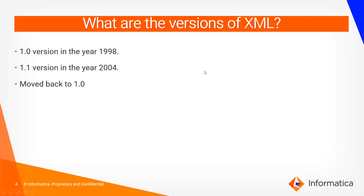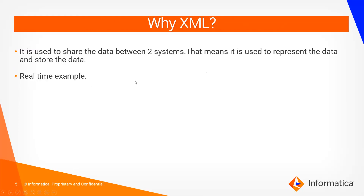What are the versions of XML? Version 1.0 came in the year 1998, version 1.1 came in the year 2004, and in 2006 we got a second edition of 1.1. But later they moved back to 1.0. So the versions available are 1.0 and 1.1, but the most commonly used version is 1.0.